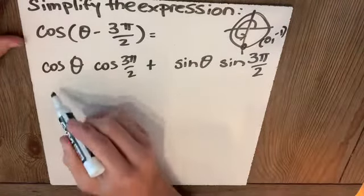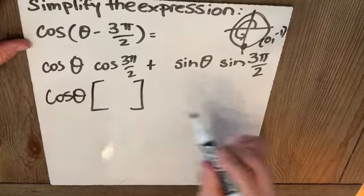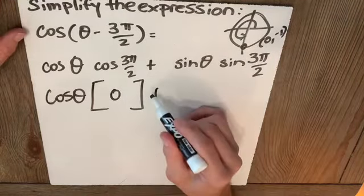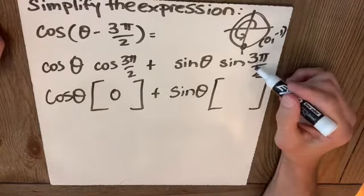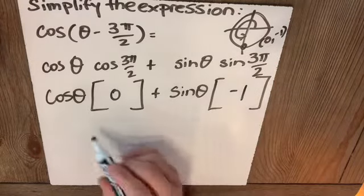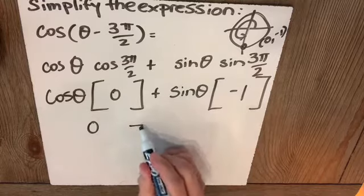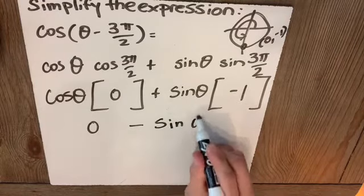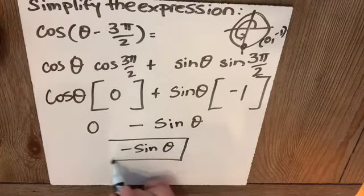So this becomes cosine of θ times cosine of 3π/2, which is 0, plus sine of θ times sine of 3π/2 is -1, which gives us 0 negative times positive minus sine θ, which gives us negative sine θ. We have simplified this.